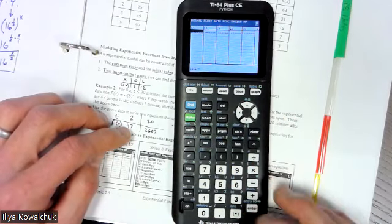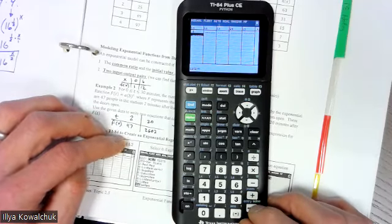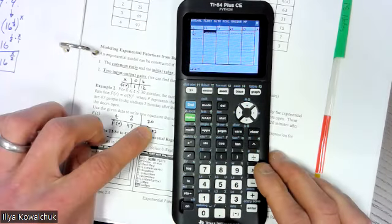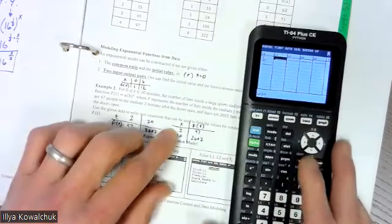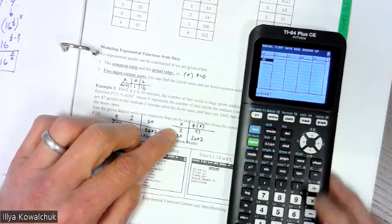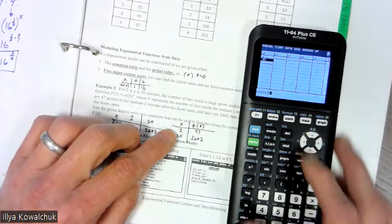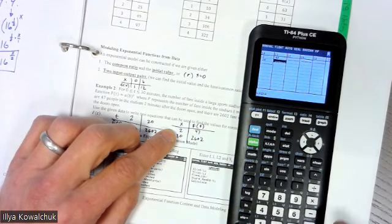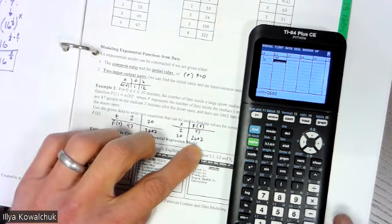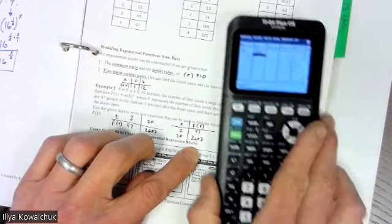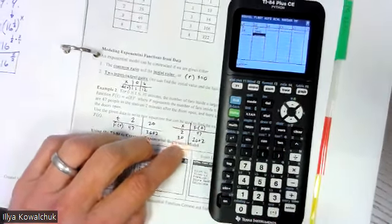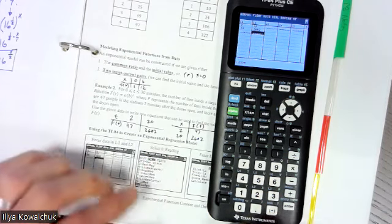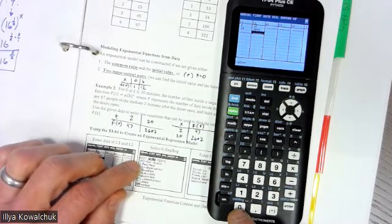I enter my two input values: two minutes and twenty minutes. Then for outputs: after two minutes there are 47 people, and after 20 minutes there are 2602 people in the stadium. Now for the next step, I need to run exponential regression. I go back to STAT, then over to CALC, and scroll down to zero which is exponential regression.